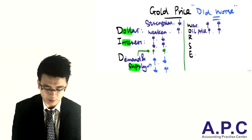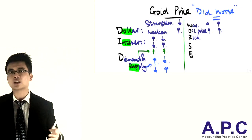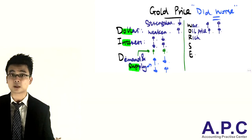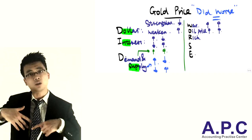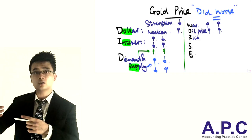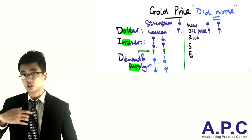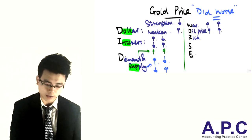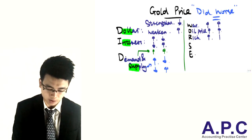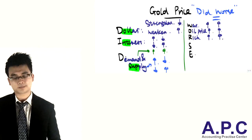The R stands for rich — which means as people get richer and richer, they've got loads of money. They invest into gold to try to secure their money and make it safer. Hence, the richer the people become, the price of gold will actually increase as a result.